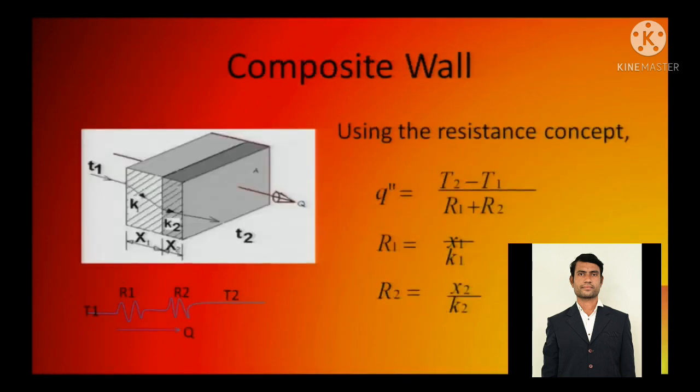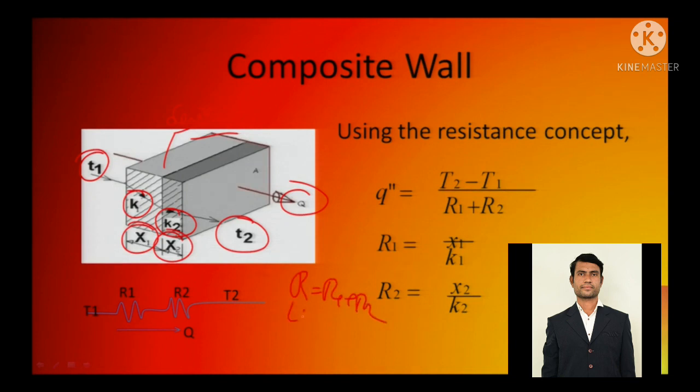Composite wall. Now there could be many components here: this is k1, this is k2, x1, x2, T1, T2, and heat is flowing through. Since these are in series, the resistances will be added up: L1 by k1 A plus L2 by k2 A. See here it is R1 plus R2, x1 by k1, x2 by k2. A has been taken common because this has the common area. So this is how you solve.